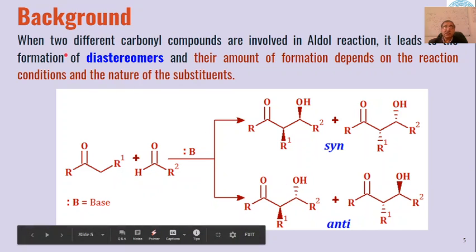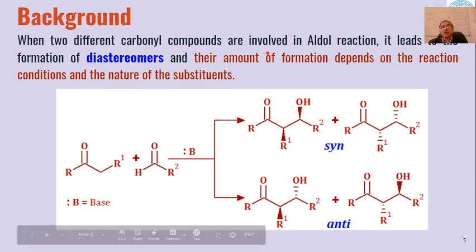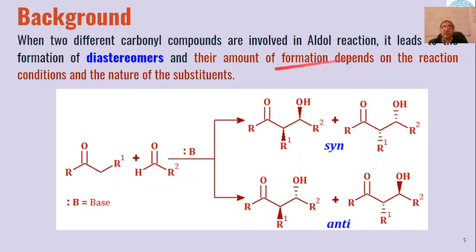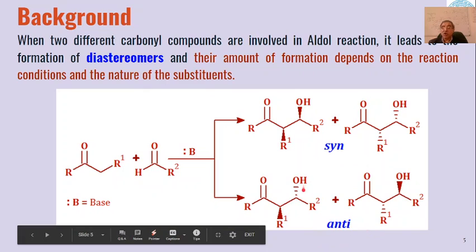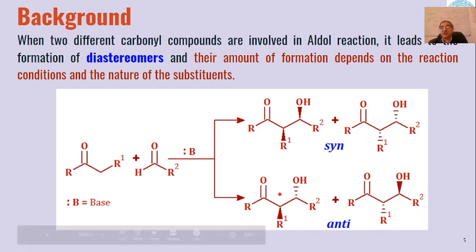When two different carbonyl compounds are involved in aldol condensation, this leads to the formation of diastereomers. The amount of diastereomer formed depends on the reaction conditions and nature of the substituents — including the kind of base used, the temperature, and the reaction time. These conditions, along with the nature of the substituents, determine whether we get a syn compound or anti compound, or a mixture of all types of products.